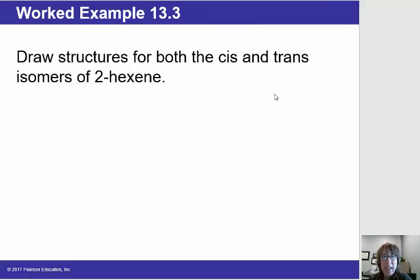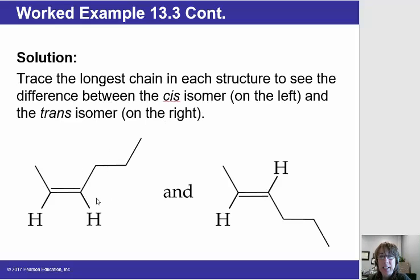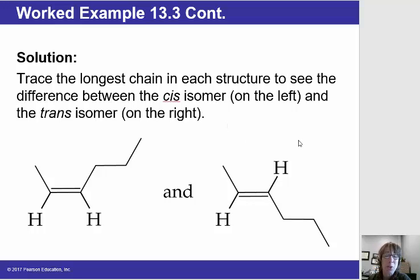Pause this video and draw the line structures for cis and trans isomers up to hexene. The answer in the PowerPoint writes out the hydrogens, which we normally wouldn't do in a line structure. But it clearly shows that in the cis conformation — which looks like a boat — the hydrogens are on the same side of the double bond, and in the trans configuration the hydrogens are on the opposite side. Writing the trans in the mountain format would also be completely correct.